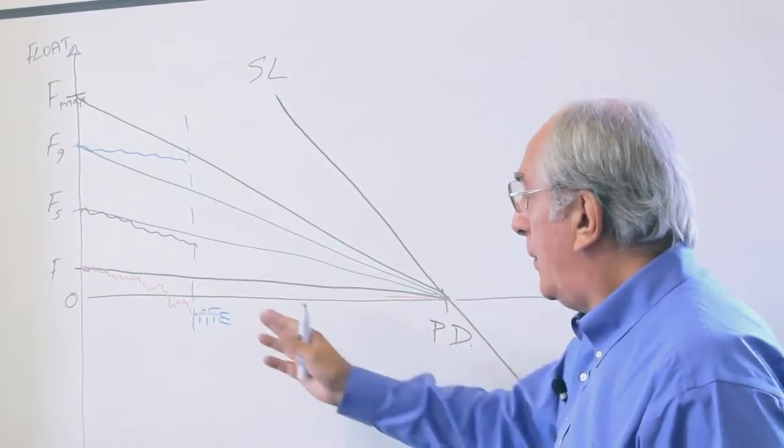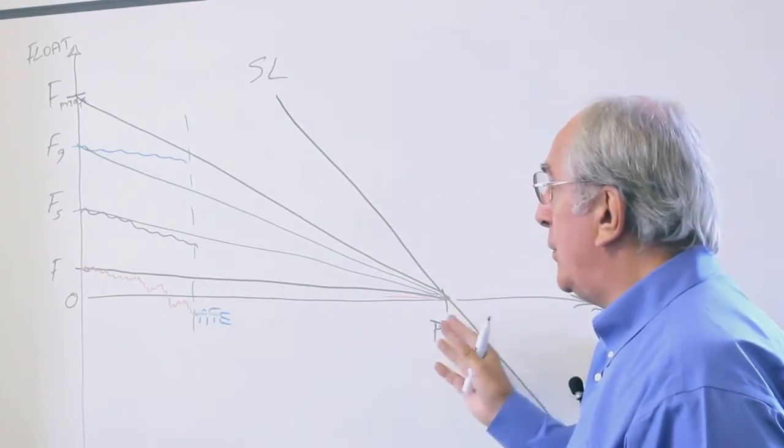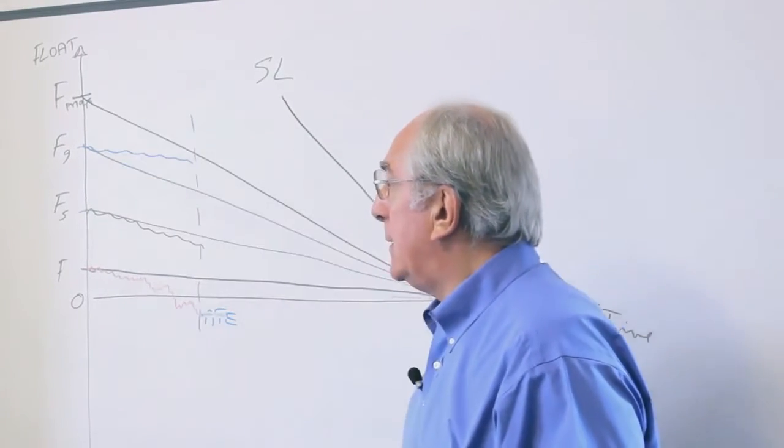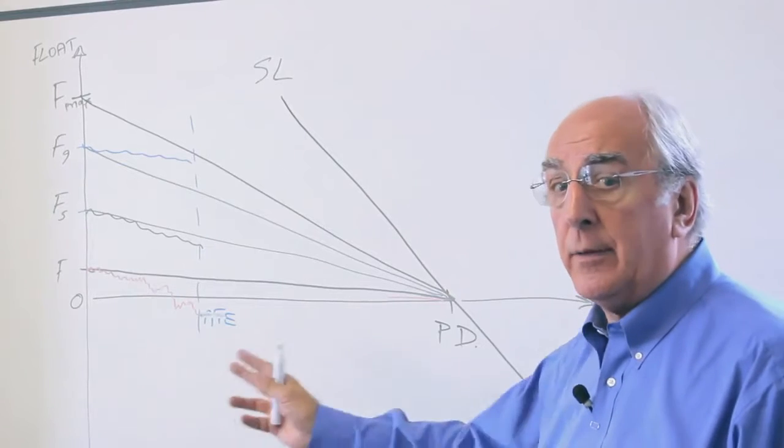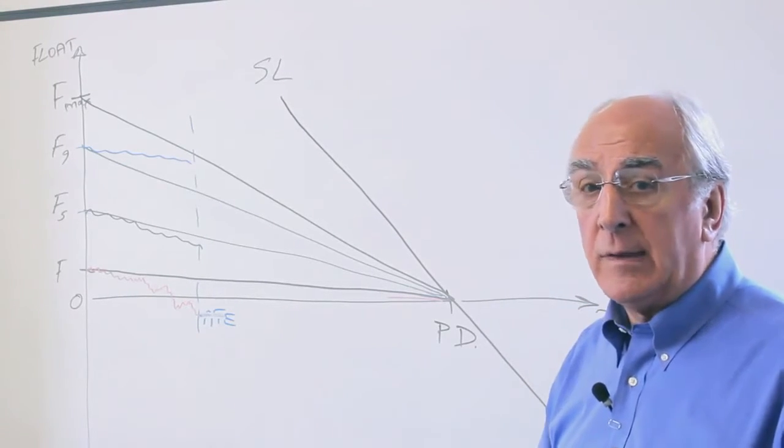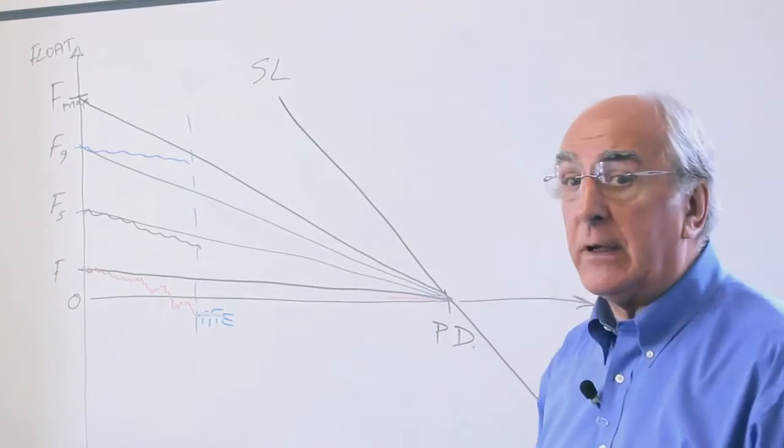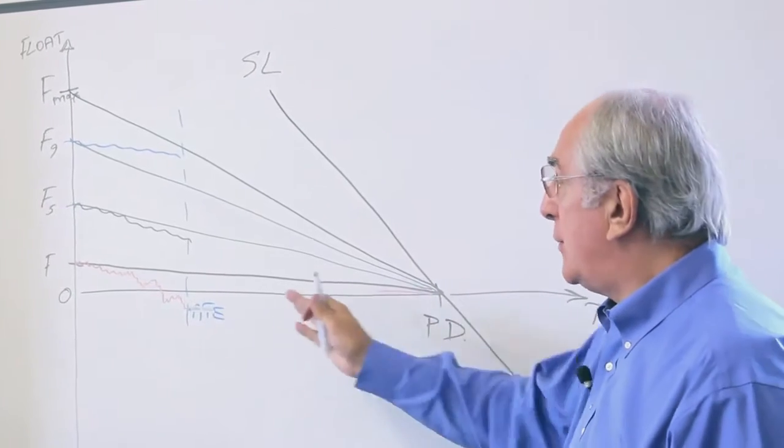In essence, if we have working days along the project duration, therefore working days in the float up there, and the days on this axis are the same scale, this is a 45-degree line. It can change if we modify this to be a calendar date.